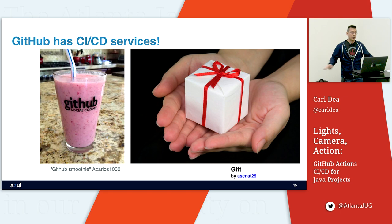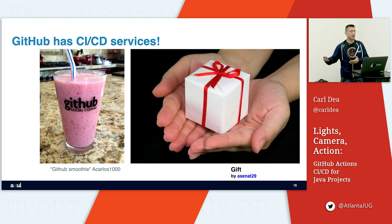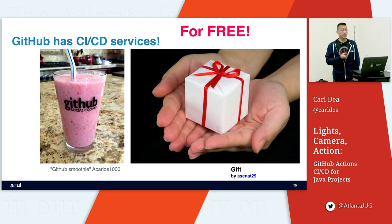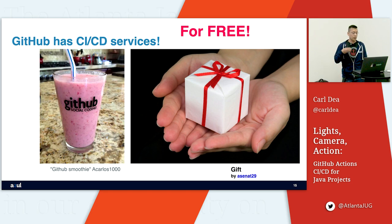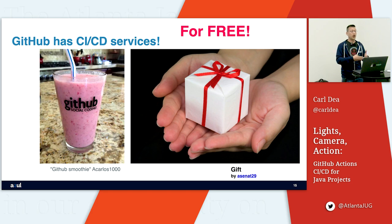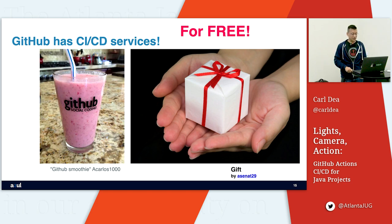Everyone knows GitHub as a source repository. You store your source code there — lots of open source projects, and companies can pay for enterprise services with private projects. They also have free CI/CD build services, just like Travis used to. With GitHub, it's called GitHub Actions, and I want to show you how to build a GitHub Action workflow to do all that orange section within the DevOps CI/CD pipeline.